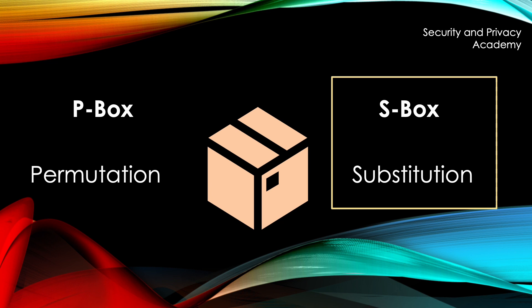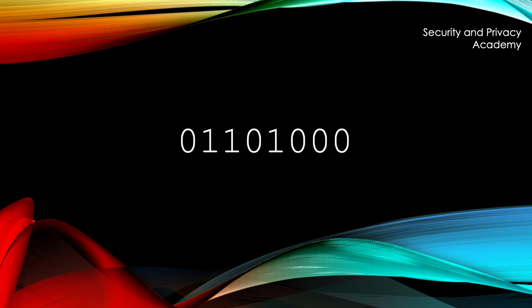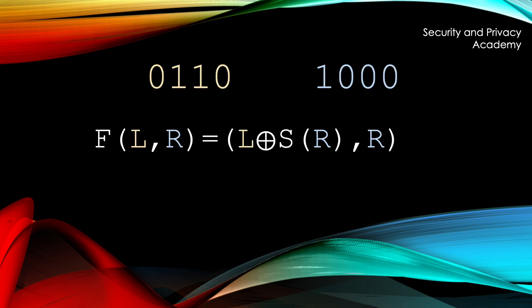Let's look at an example to see how it works. If we take these eight bits, we first separate them into a left and a right part. The Feistel network now works as follows. It takes as input these two parts and XORs the left part with the output of a function S applied to the right part. The original right part stays the same.